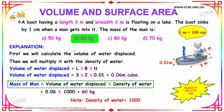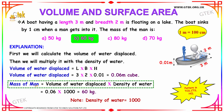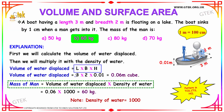The volume of the water displaced is obtained by the formula length into breadth into height. So the volume of the water displaced is: length 3 meter, breadth 2 meter and height 0.01 meter, which gives 0.06 meter cube.